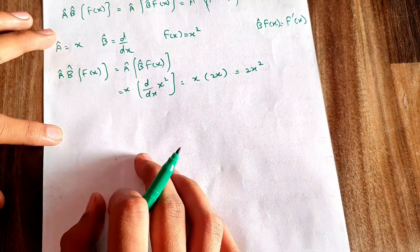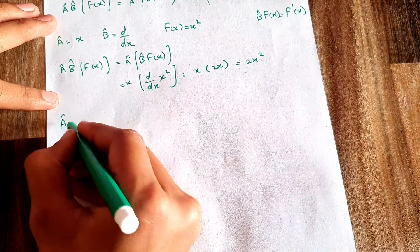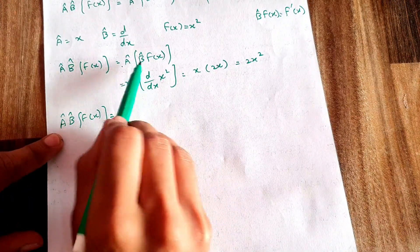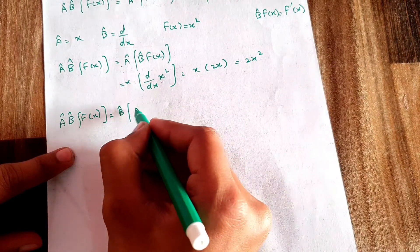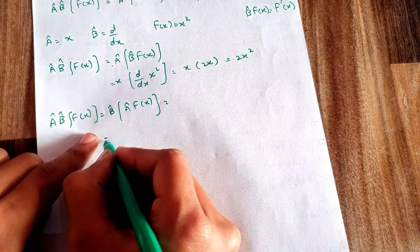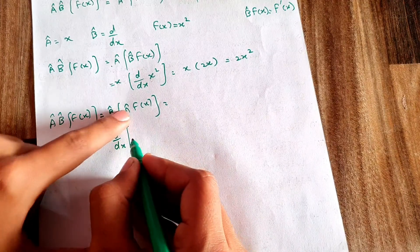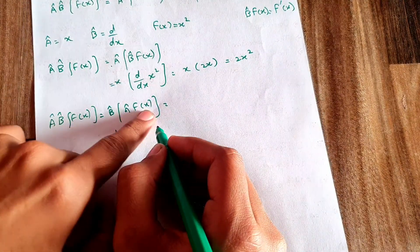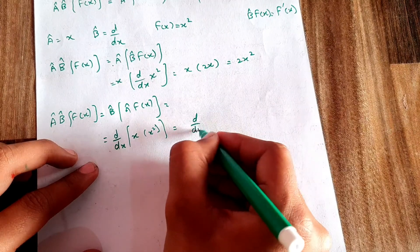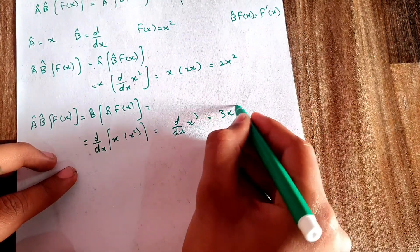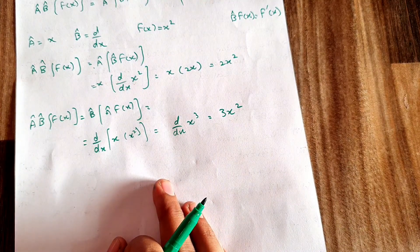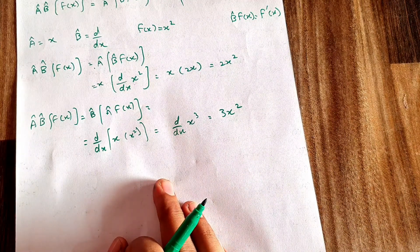Now if I change the order — applying A first and then B — using B·A·f(x): I apply A = x on f(x) = x² first, giving x·x² = x³. Then applying B = d/dx on x³ gives 3x². Since 2x² ≠ 3x², the two results are not equal, showing that the order of multiplication matters.